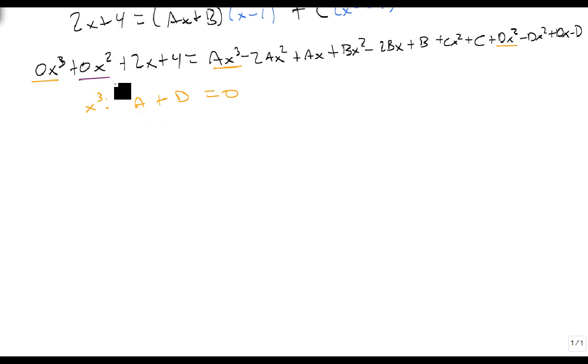Let's go to our x-squareds. Everybody's got an x-squared. So we get minus 2a, plus b, plus c, minus d, equals 0.